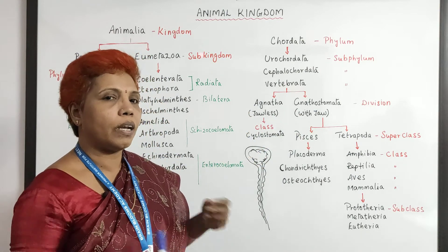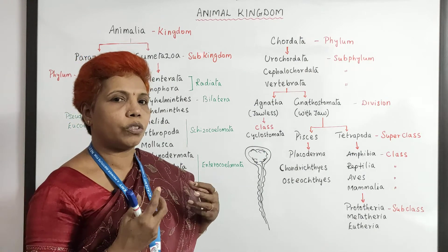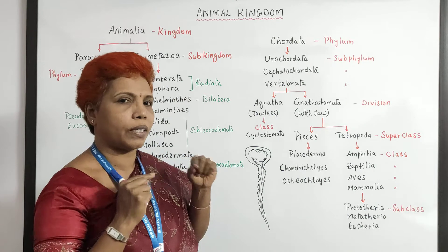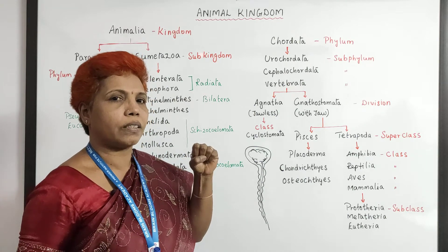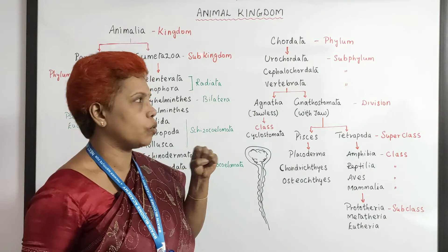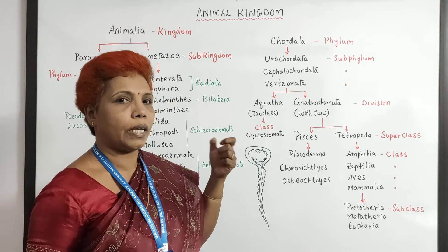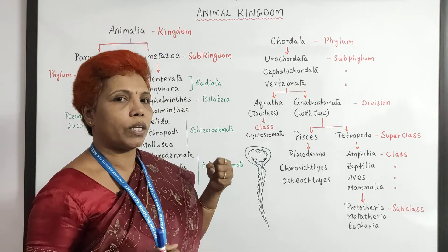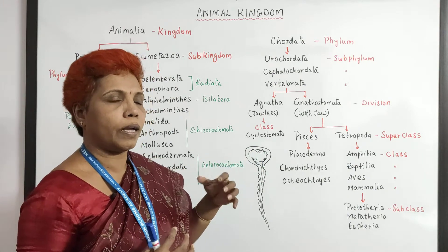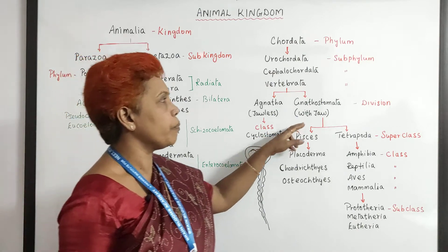Agnatha are the cyclostomates. They are considered lazy animals because the mouth is without a jaw — it has a small sucking type of mouth with tentacle-like structures. Gnathostomata chew and eat food well, so the body is also a good size, and the brain supplies energy and controls the entire body.